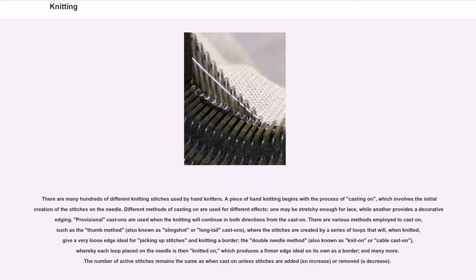There are various methods employed to cast on, such as the thumb method — also known as slingshot or long tail cast on — where the stitches are created by a series of loops that will, when knitted, give a very loose edge ideal for picking up stitches and knitting a border; and the double needle method — also known as knit on or cable cast on — whereby each loop placed on the needle is then knitted on, producing a firmer edge. The number of active stitches remains the same as when cast on unless stitches are added (an increase) or removed (a decrease).